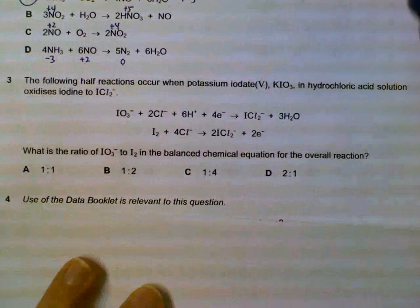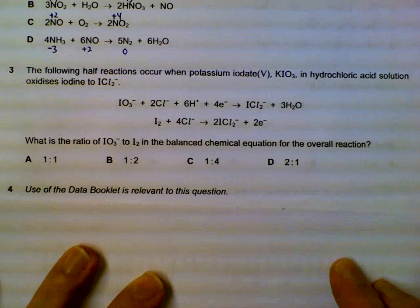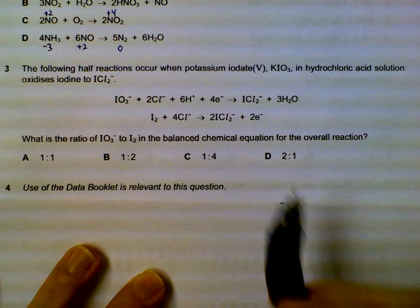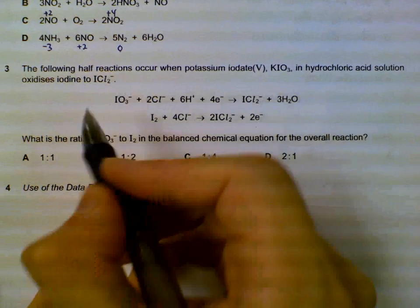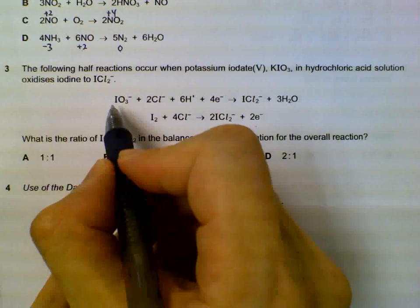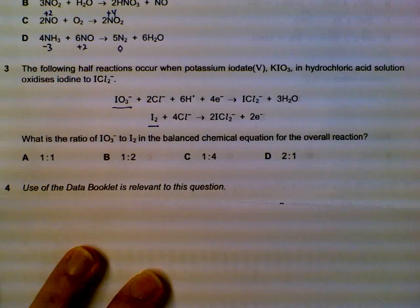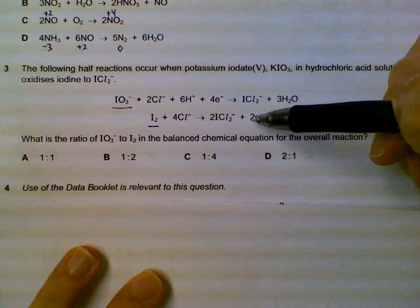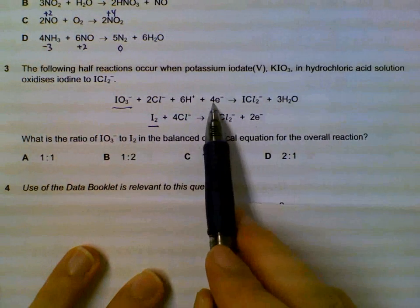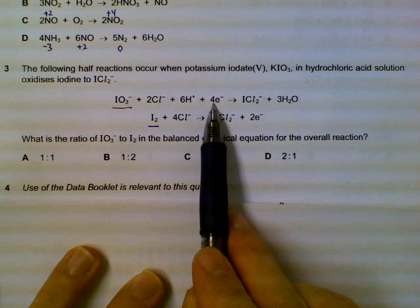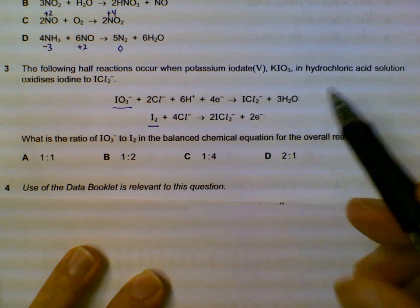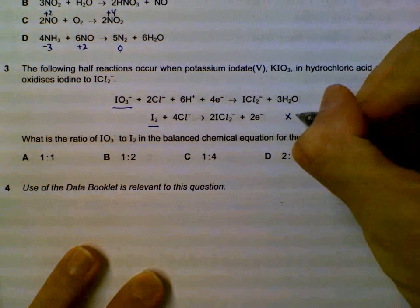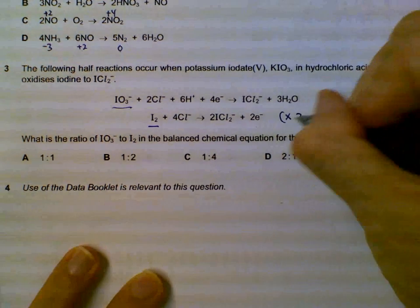Number three, we have a reduction and oxidation and we need to find out what are the ratio of the species that the iodate and iodine actually reacts in. Now before we can actually combine the two equations together, we must make sure that the same number of electrons are exchanged. So we have four here and two here.